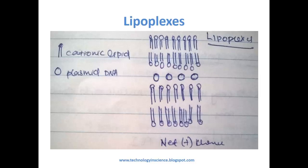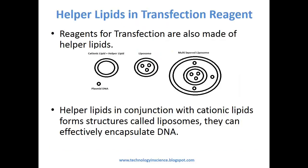Lipoplexes are organized lipid molecules in the form of micelles or liposomes, which when complexed with DNA can be used effectively for transfection. The net positive charge of the lipoplexes is effective for transfection. Reagents for transfection are also made of helper lipids. Helper lipids in conjunction with cationic lipids form structures called liposomes, which can effectively encapsulate DNA.